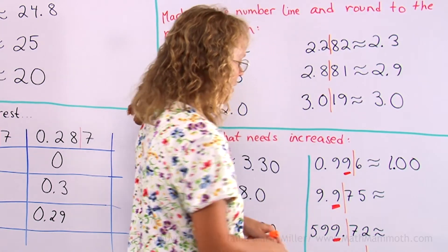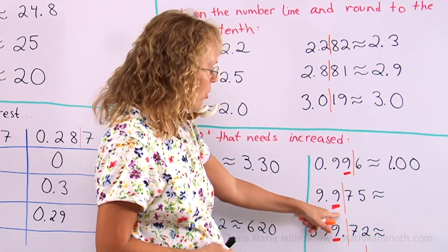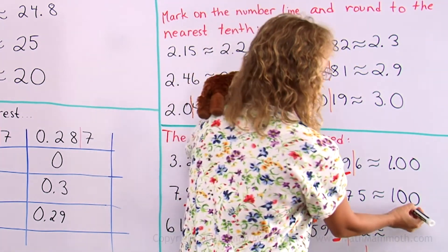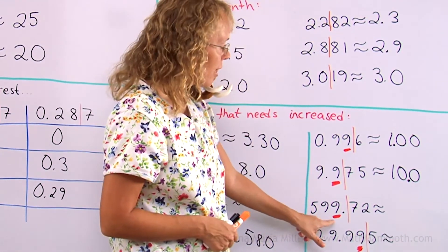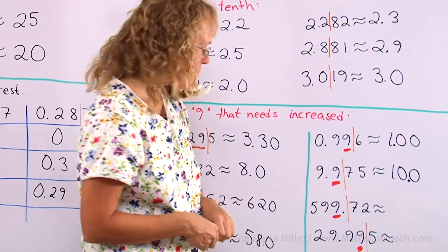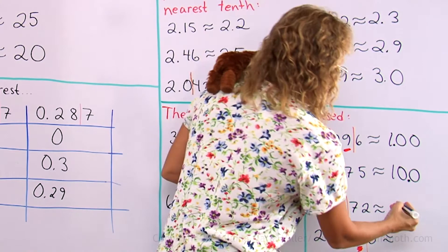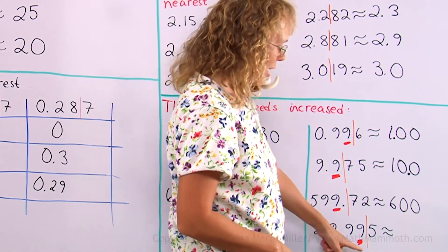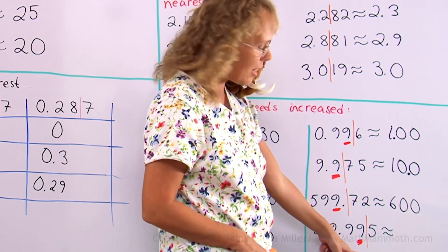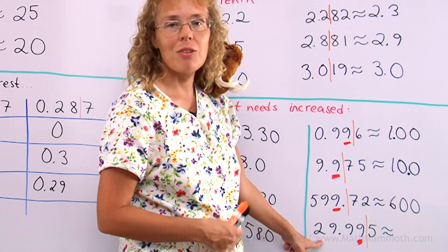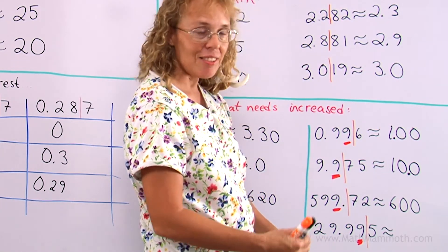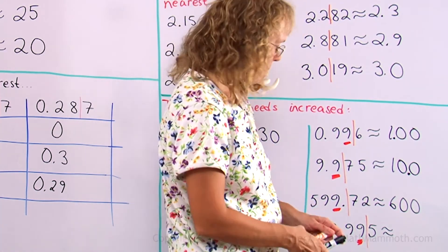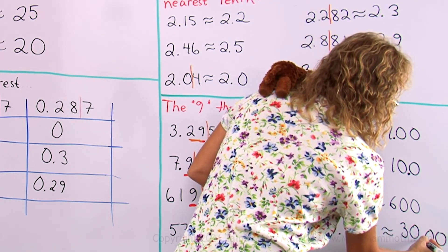9.975: rounding to the nearest tenth. 9 needs to be increased by 1 — look at 99 and increase that to 100 — but the actual answer is 10.0. 599.72: you can probably see it's going to be rounded to 600 — just look at 599 and round that to 600. 29.995: lots of 9s there. When we try to increase this 9 we cannot, and we cannot increase the next 9 either — the first digit we can increase is the 2, making it 3. It's as if the number 2,999 gets increased to 3,000 — so we have exactly 30.00.